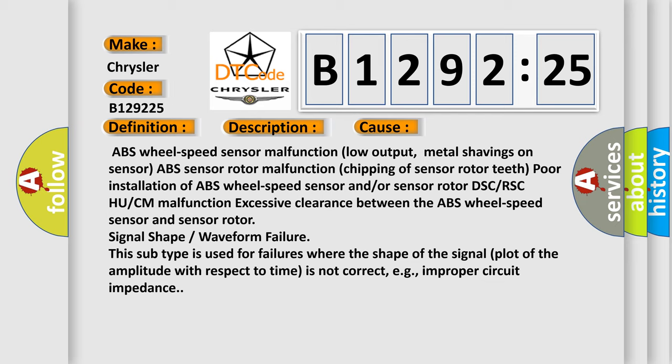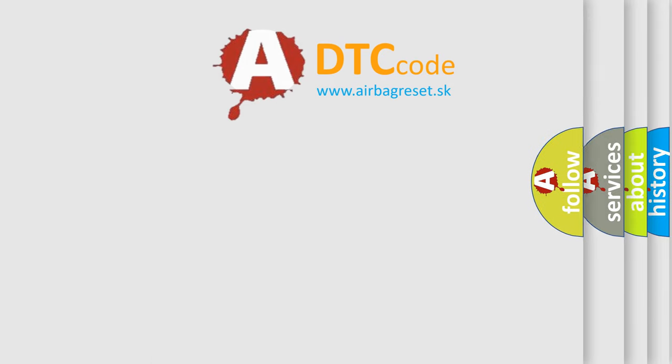This subtype is used for failures where the shape of the signal plot of the amplitude with respect to time is not correct, e.g., improper circuit impedance.